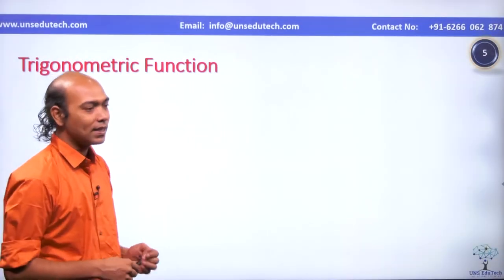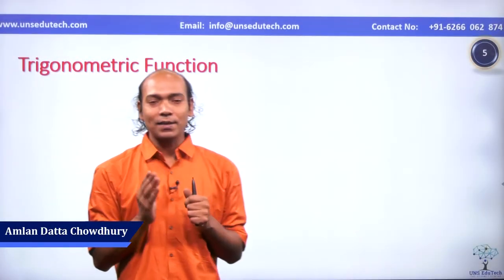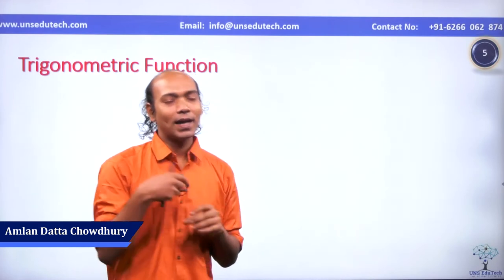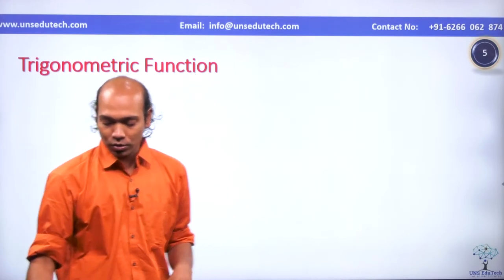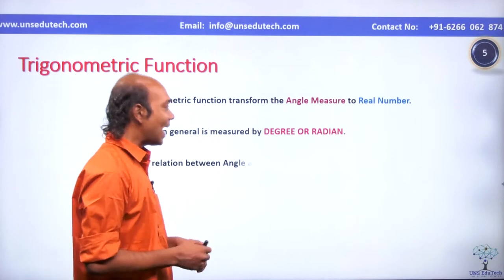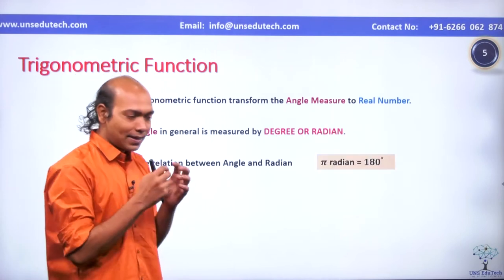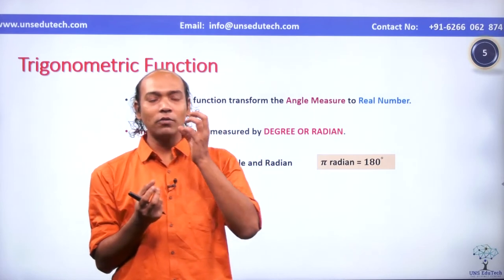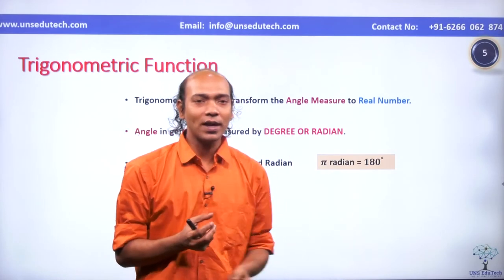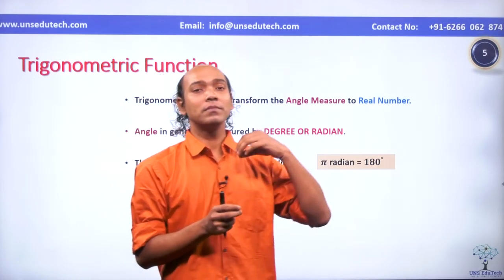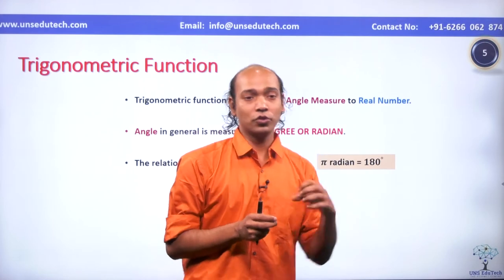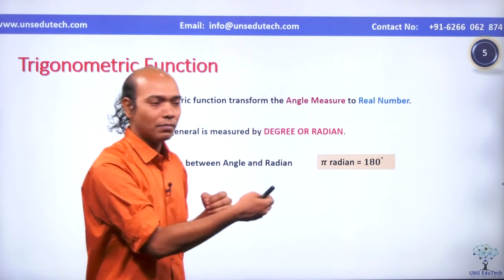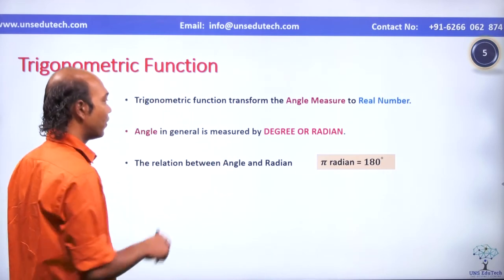Trigonometric function — as we discussed at the beginning of the class, trigonometry deals with the angle and the length of the sides. Trigonometric function takes the angular value or angle value of any angle of a right angle triangle to some ratio — that is called a trigonometric function.